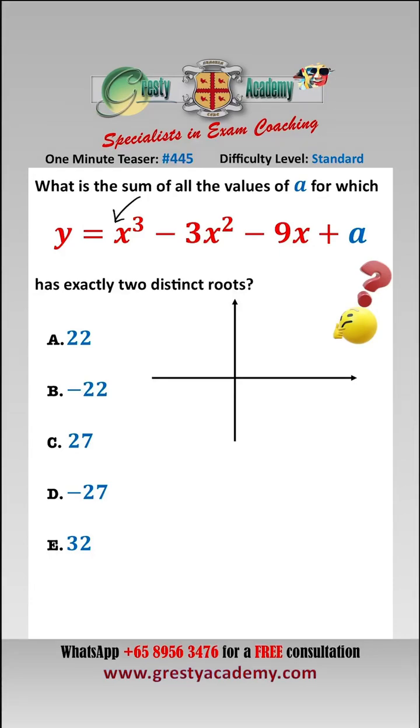As the coefficient of x cubed is positive, we know that the curve is upward sloping from left to right. To have two distinct roots, it will either look like this, where it just touches the x-axis like that, or it just touches the x-axis like that.